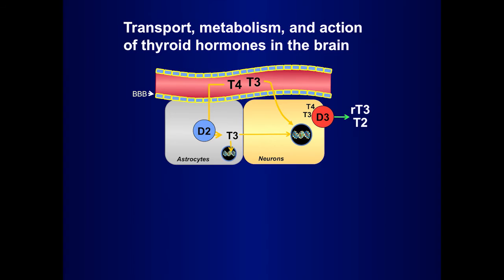The T3 formed would cross the membrane from the astrocytes to neurons and act on the nuclei. In the neurons, Deiodinase 3 would degrade T4 and T3 to the inactive metabolites rT3 and T2. We now know that in this process the presence of transporters is essential, and the main function of MCT8 is at the blood-brain barrier.